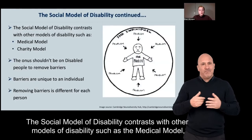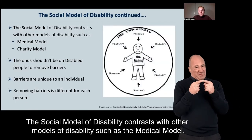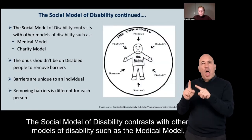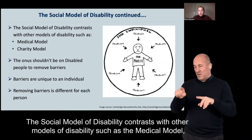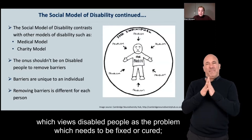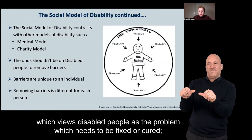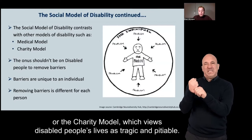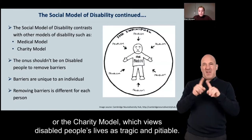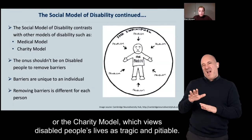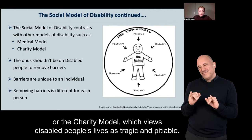The social model of disability contrasts with other models of disability, such as the medical model, which views disabled people as the problem which needs to be fixed or cured, or the charity model, which views disabled people's lives as tragic and pitiful.